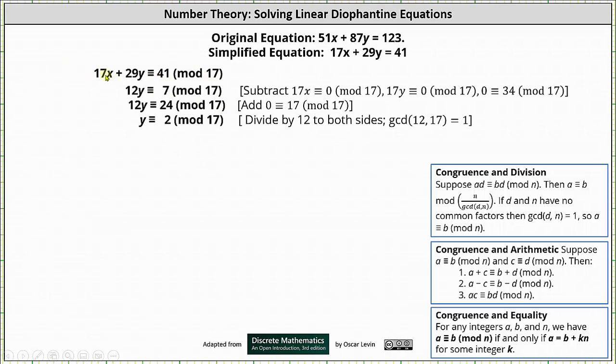We can subtract 17x from 17x because 17x ≡ 0 (mod 17). We can subtract 17y from 29y because 17y ≡ 0 (mod 17). We can subtract 34 from 41 because 34 ≡ 0 (mod 17). Notice 2 times 17 is 34.